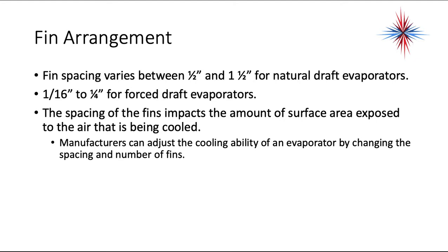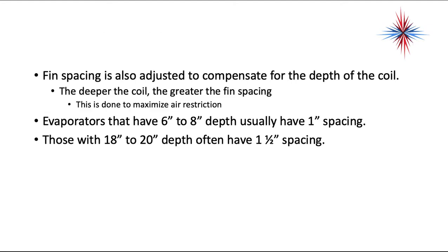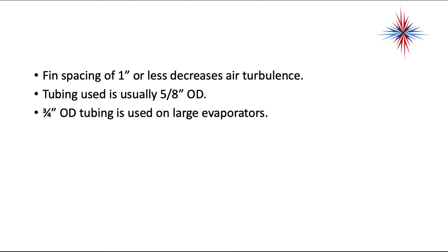Fin spacing varies between half-inch and one-and-a-half-inch for natural draft evaporators, and one-sixteenth-inch to one-quarter-inch for forced draft evaporators. The spacing of the fins impacts the amount of surface area exposed to the air being cooled. Manufacturers can adjust the cooling ability of an evaporator by changing the spacing and number of fins — the more fins, the more surface area exposed to the air stream. Fin spacing is also adjusted to compensate for the depth of the coil; the deeper the coil, the greater the fin spacing, to maximize air restriction. A fin spacing of an inch or less decreases air turbulence.